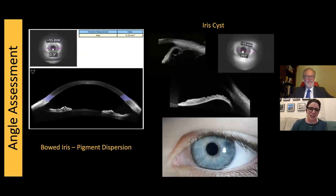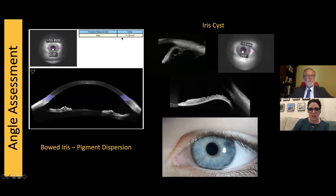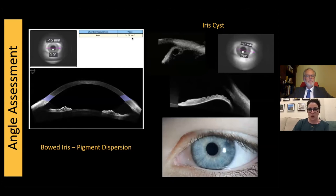Other uses of our anterior segment OCT: we can evaluate and monitor patients with pigment dispersion. This is a nice image showing the bowing back of the iris in pigment dispersion. Notice the vast difference in anterior chamber depth — the anterior chamber is so much larger in patients with pigment dispersion compared to our narrow angle patients. Get used to looking at those numbers.